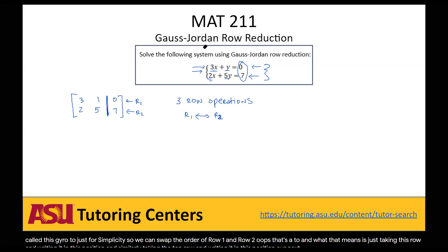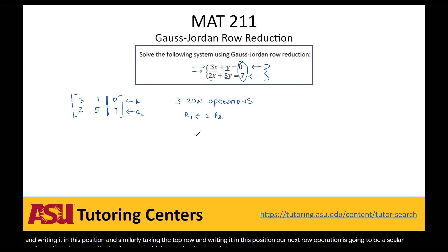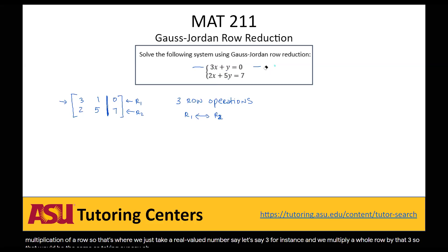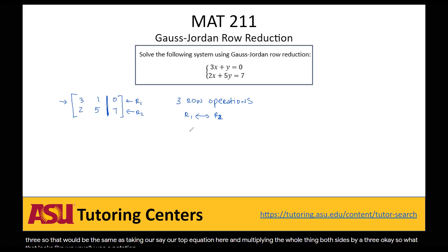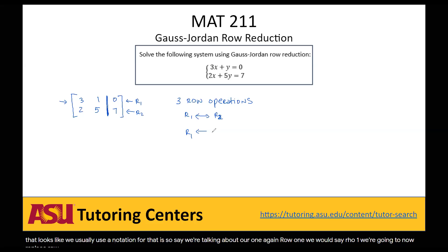The second row operation is scalar multiplication of a row — we take a real-valued number, say 3 for instance, and multiply a whole row by that 3, multiplying both sides. The notation for this is: R1 becomes 3 times R1, and then we just take each one of the numbers and multiply by 3.